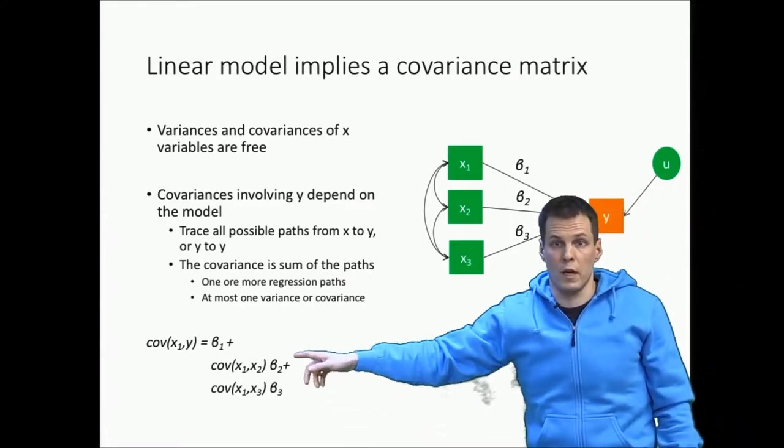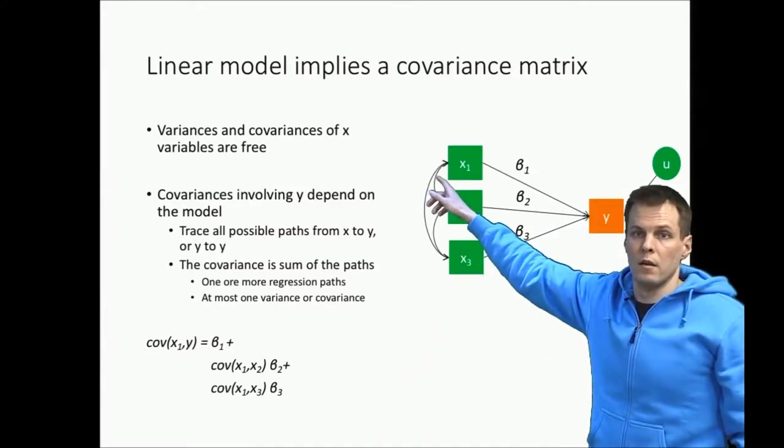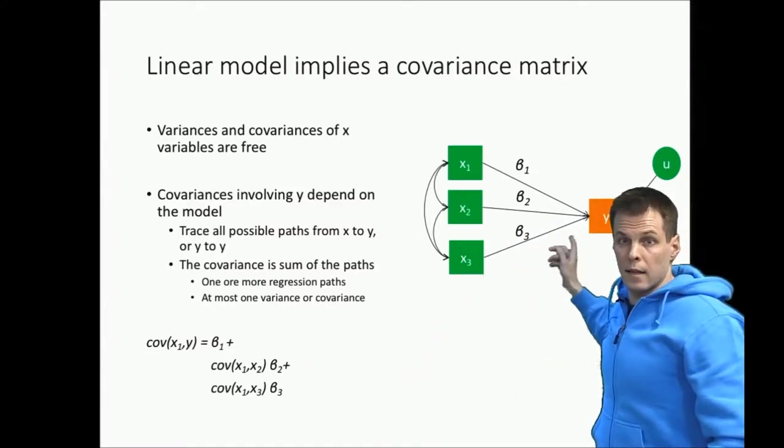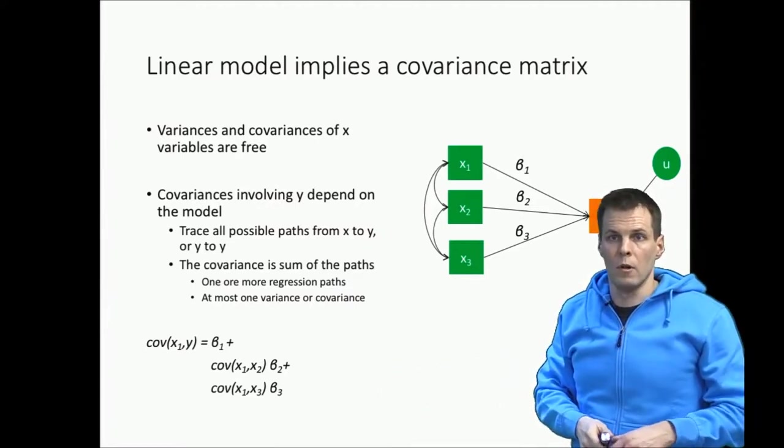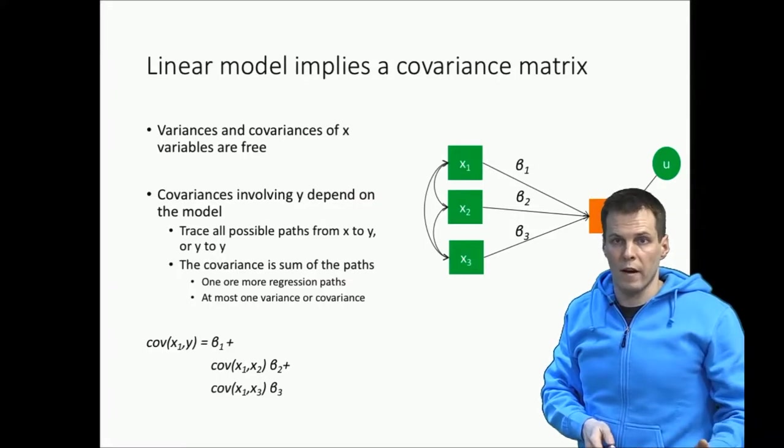We sum those together, that gives us the covariance between x1 and y, and that's exactly the same math as we had in a correlation example, but instead of working with correlations we work with covariances.